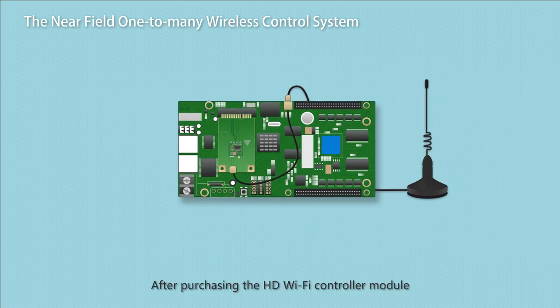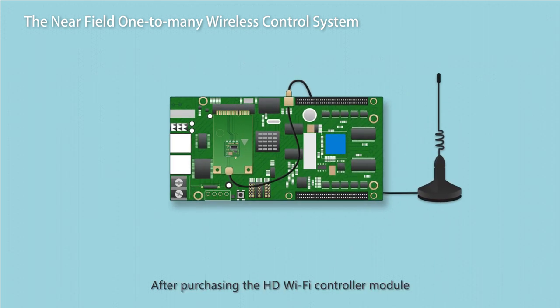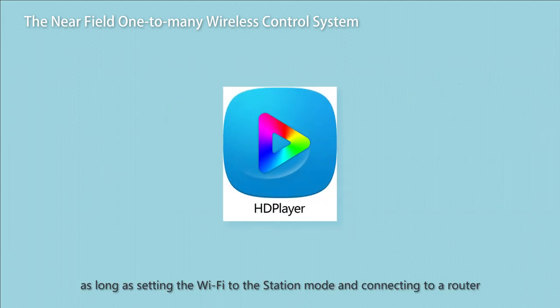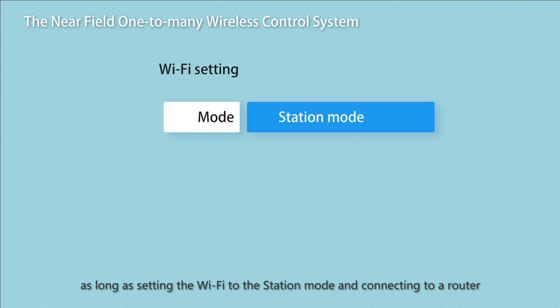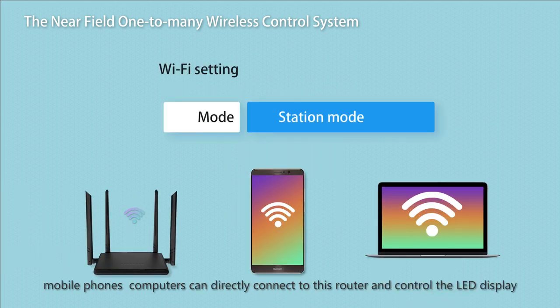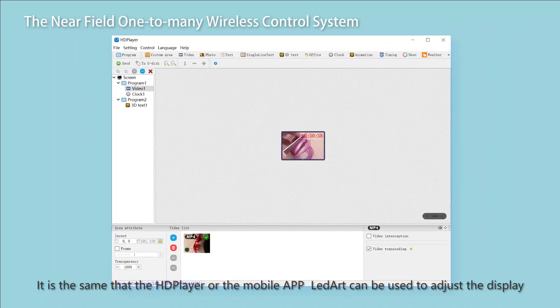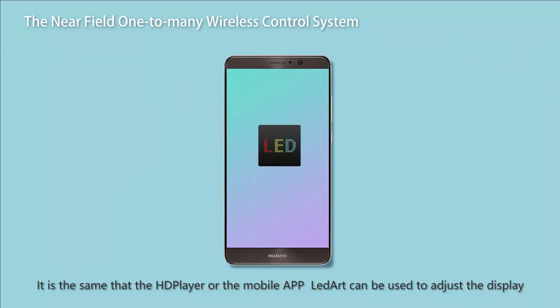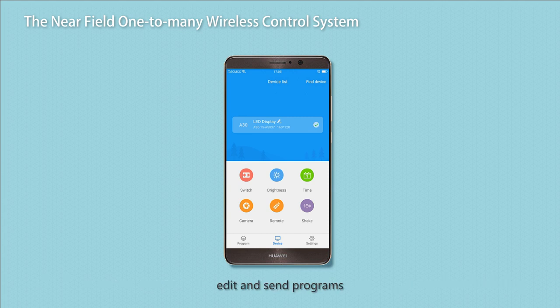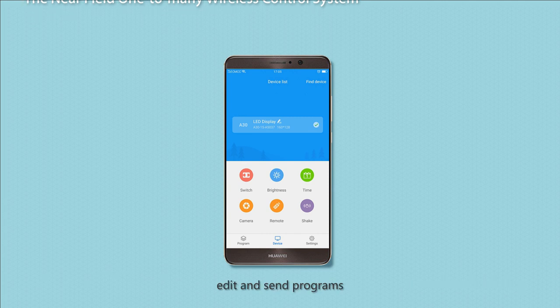After purchasing the HD Wi-Fi Controller Module, as long as setting the Wi-Fi to Station Mode and connecting to a router, mobile phones and computers can directly connect to the router and control the LED display. HD Player or the mobile app LED Art can be used to adjust the display, edit and send programs.